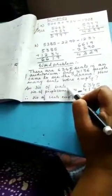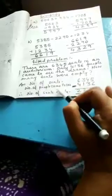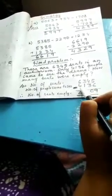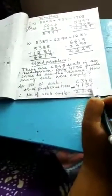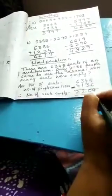Number of seats. I have written number of seats. But you have to write number of seats in an auditorium. That is 6,345. Number of people came to see 4,136. Number of seats empty. You subtract these two numbers. Your answer will come 2,209.